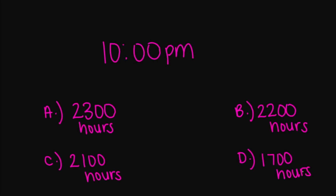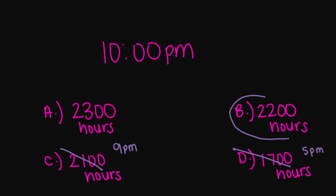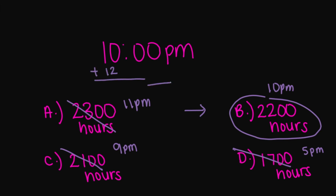What about 10 p.m. converted into military time? Is it going to be A, 2300 hours; B, 2200 hours; C, 2100 hours; or D, 1700 hours? We know it's not D — 1700 hours is 5 p.m. It's not C — 2100 hours is 9 p.m. And 2300 hours would be 11 p.m. So the correct answer is B, 2200 hours, because we added 12, which gives us 22.